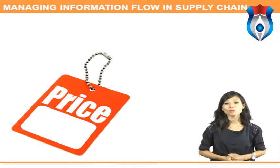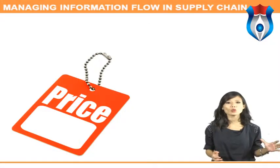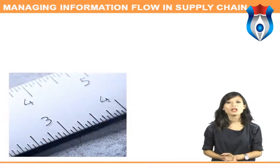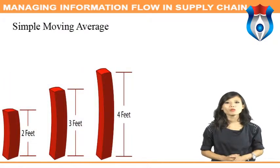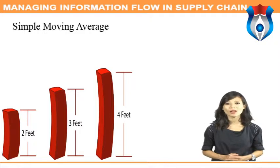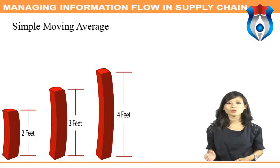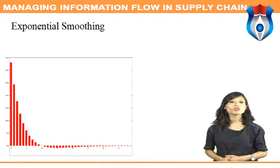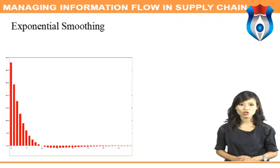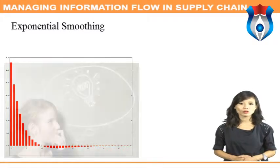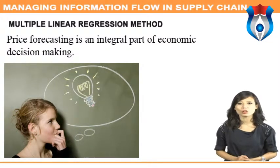A simple moving average (SMA), also known as an arithmetic average, is a common average of the price values in the data series. Each price in the data series is equally weighted — no weighting factors are applied to any of the data points. Exponential smoothing is a very popular scheme to produce a smoother time series. Whereas in a simple moving average the past observations are weighted equally, exponential smoothing assigns exponentially decreasing weights as observations get older.